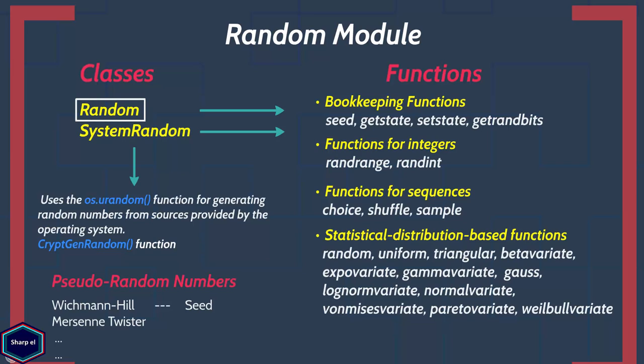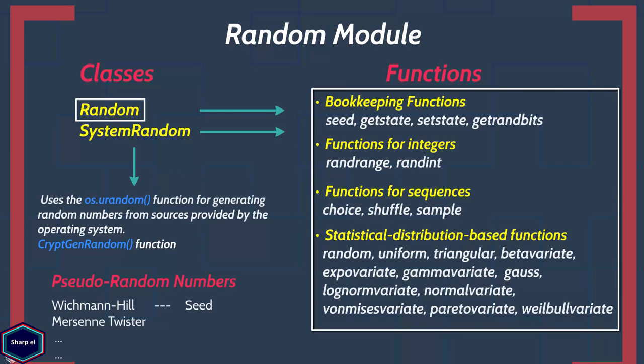Now let's look at the methods provided by the random class. All these functions on the right-hand side are actually methods of one hidden global instance of class random.